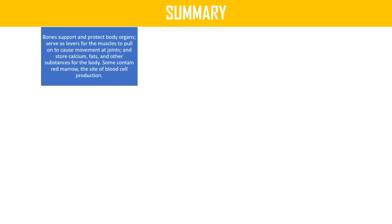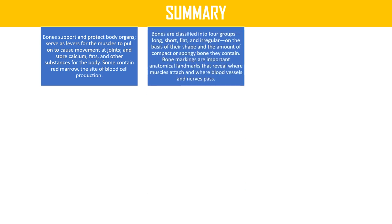Summary: bones support and protect body organs, serve as levers for muscles to cause movement at joints, and store calcium, fat, and other substances. Some contain red bone marrow, the site of blood cell production. Bones are classified into four groups — long, short, flat, and irregular — based on their shape and the amount of compact or spongy bone they contain. Bone markings are important anatomical landmarks that reveal where muscles attach and where blood vessels and nerves pass.